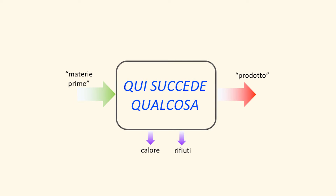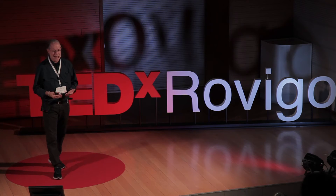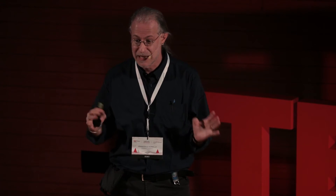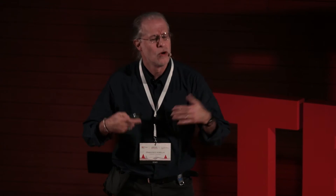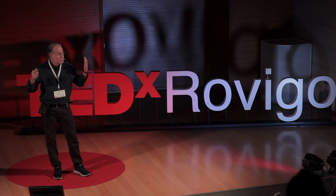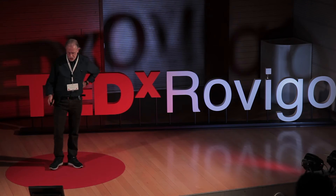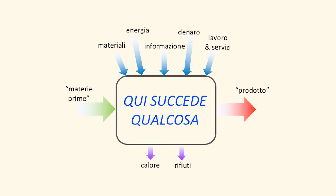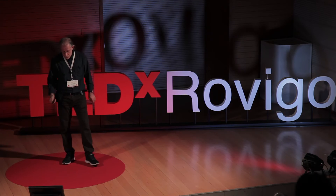Cerchiamo di capire cosa succede. Noi abbiamo un input a sinistra — materie prime nel senso più generale del termine — un output a destra, e in mezzo succede qualcosa che dà luogo al prodotto, al servizio, al comparto. Questo qualcosa richiede il contributo di risorse che tipicamente assumono l'aspetto di energia, materia, lavoro, danaro, informazione.